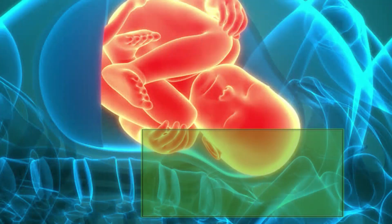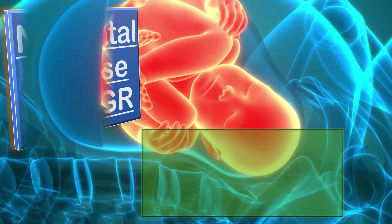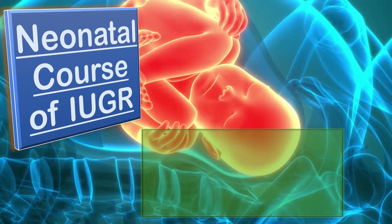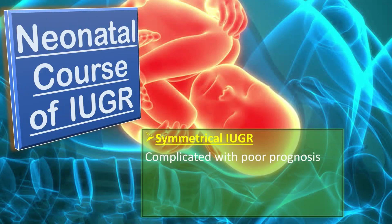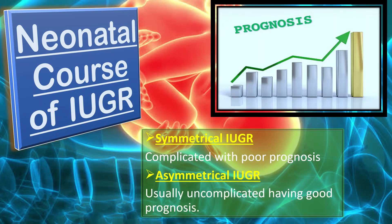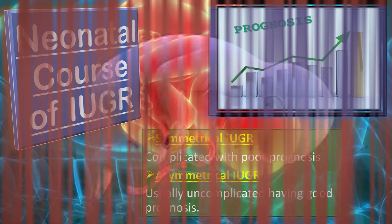The next difference is about neonatal outcome and prognosis of IUGR. In symmetrical IUGR, the prognosis is poor and complicated. In asymmetrical IUGR, the prognosis is usually good and uncomplicated.